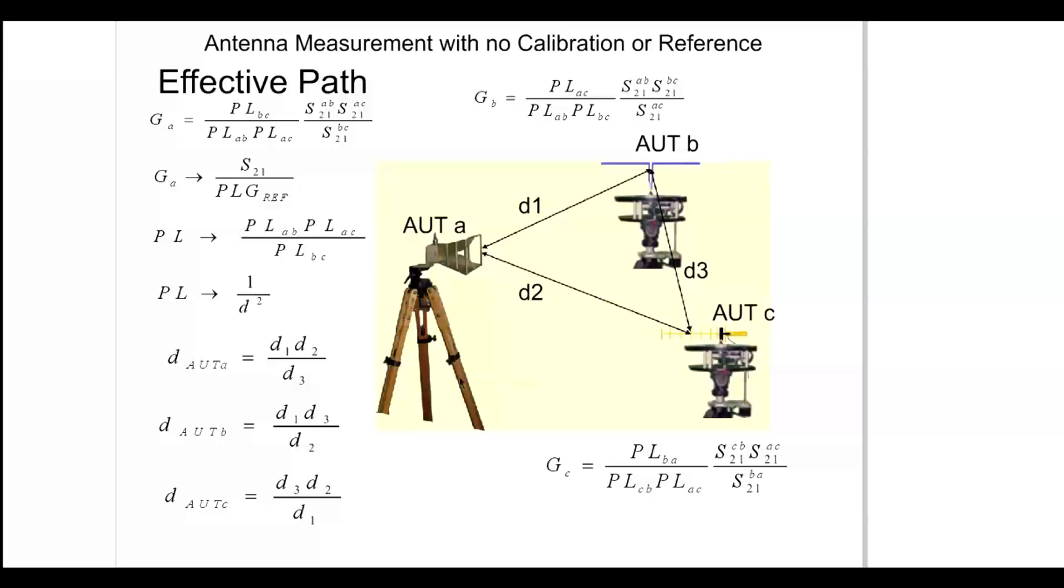Of course, it's not to say that this is including the near-field contribution as it doesn't see near-field. The effective path is simply that path which ultimately represents the measurement of the antenna under test.